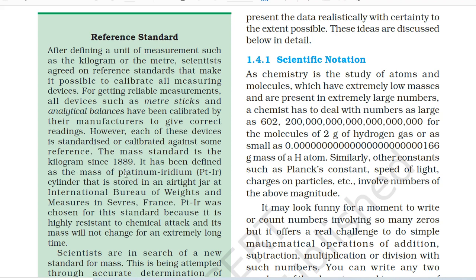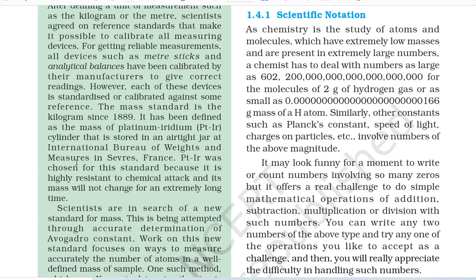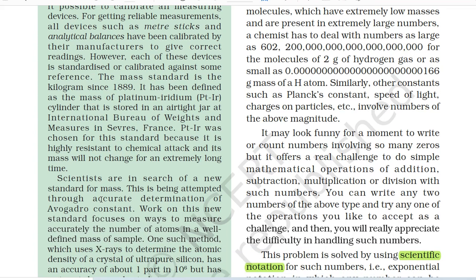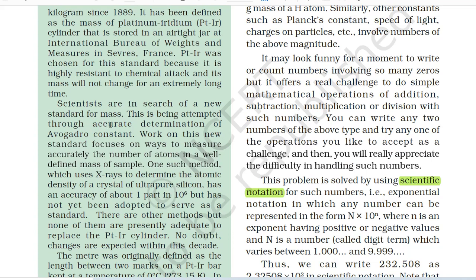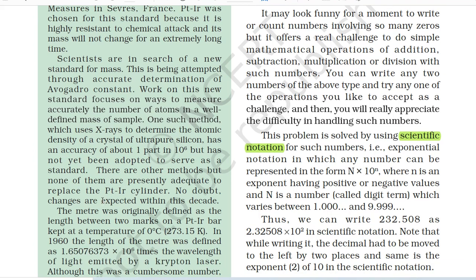The mass standard is a kilogram. Since 1889, it has been defined as the mass of a platinum-iridium cylinder stored in an airtight jar at the International Bureau of Weights and Measures in Sèvres, France. Platinum-iridium was chosen for this standard because it is highly resistant to chemical attack and its mass will not change for an extremely long time. Scientists are in search of a new standard for mass, being attempted through accurate determination of the Avogadro constant. One method uses X-rays to determine the atomic density of a crystal of ultra-pure silicon with an accuracy of about 1 part in 10⁶. No doubt changes are expected within this decade.